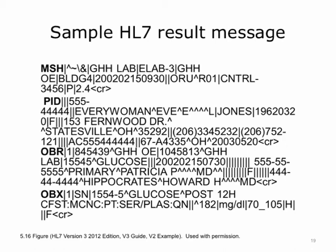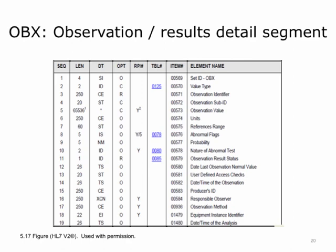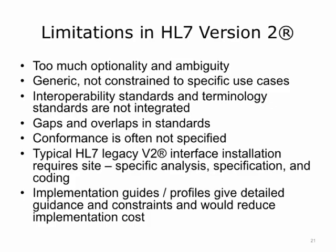Let's look closer at a sample results message. You will see the MSH segment, the PID segment, and the OBR segment, which tells us the test is a glucose reading, and the OBX segment, which contains the value of the result. Here are the fields for the OBX, the observation details segment. The common fields include identifier, units, reference range, abnormal flags, responsible observer, and observation method.